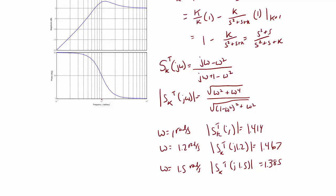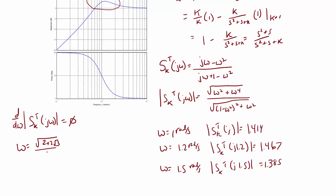Looking at the graph, the function is beginning to maximize right around the area between 1.2 and 1.5 radians per second. To find the exact value, we take the derivative of the magnitude of the sensitivity function with respect to omega and set it equal to zero. Solving for omega gives omega equal to the square root of (2 plus 2 times the square root of 3) over 2, which is 1.1687 radians per second. At this frequency, the magnitude of the sensitivity function is 1.468.